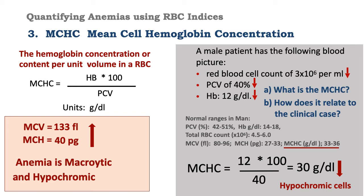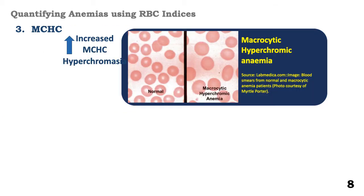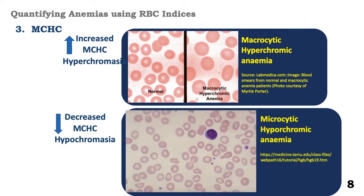We can say that the anemia in this patient is macrocytic and hypochromic. In this slide, we see cells that have got an increased MCHC value showing hyperchromasia — the ones on the left are normal, and the ones towards the right are large and staining more darkly. The ones below are showing a decreased MCHC value, or hypochromasia. They are staining much more faintly compared to normal red blood cells. These cells are also microcytic because their diameter is far smaller than that of the nucleus of a normal lymphocyte shown in the picture.